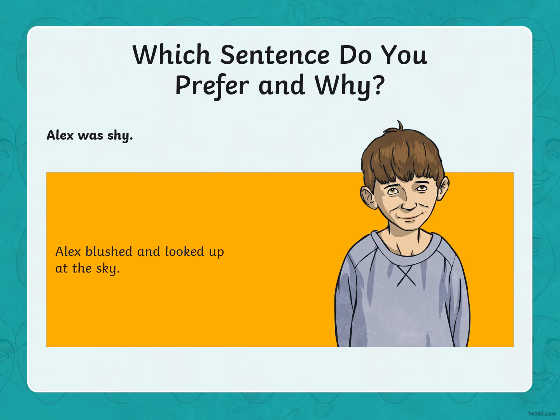'Alex was shy.' Or: 'Alex blushed and looked up at the sky.' When you're feeling a bit shy, you might not want to look at the person who is talking to you, so you might look away or look up at the sky. You might go a bit pink as well — that's what blushed means, a bit red in the cheeks.